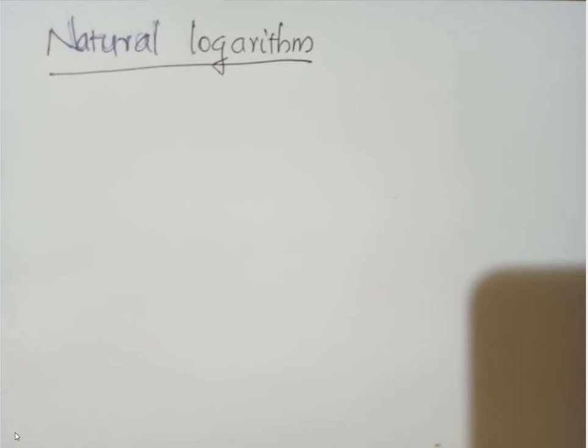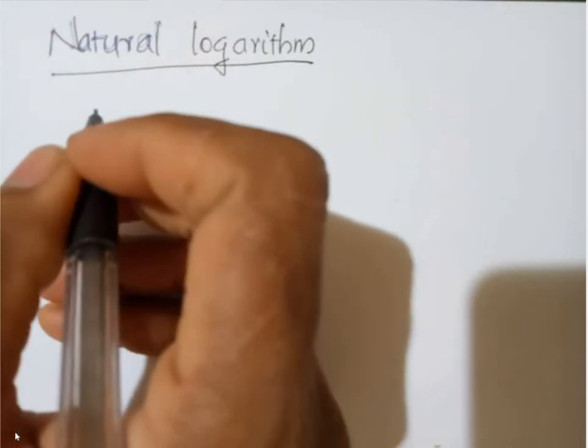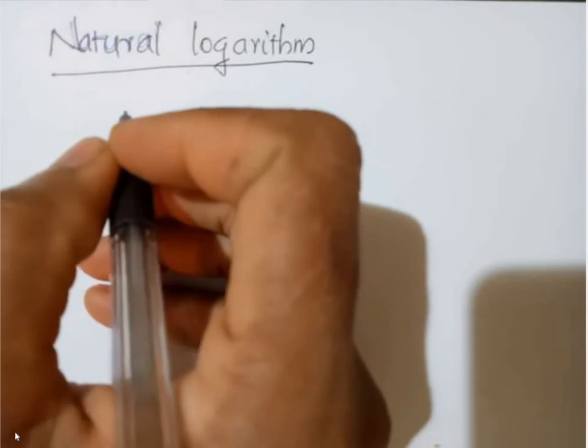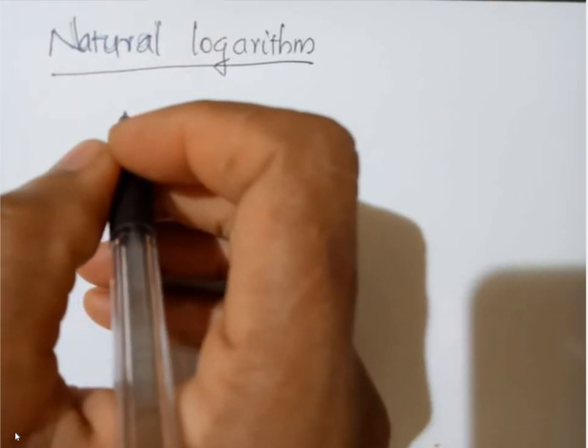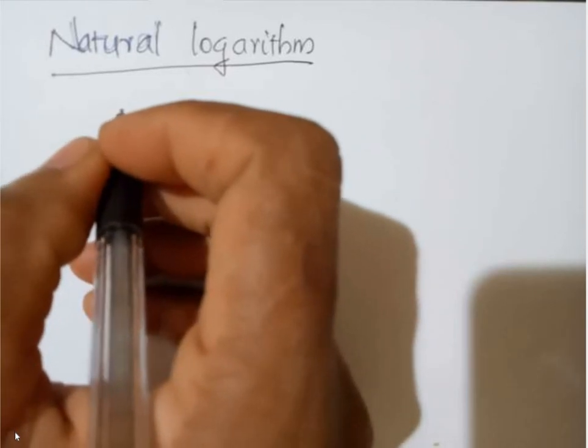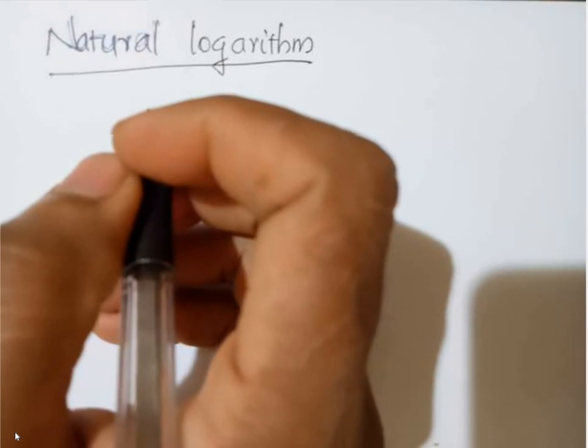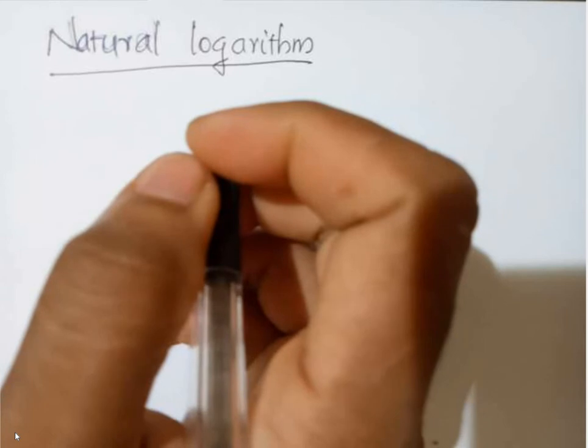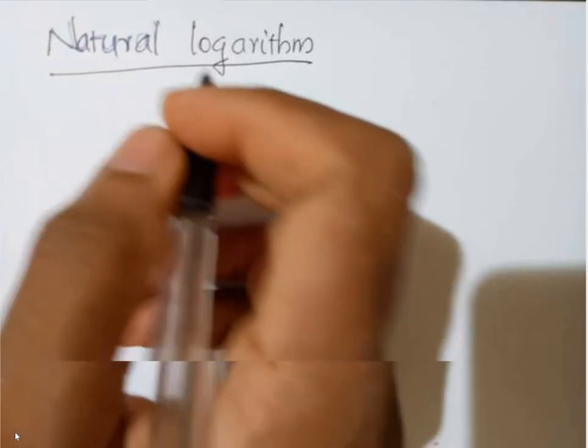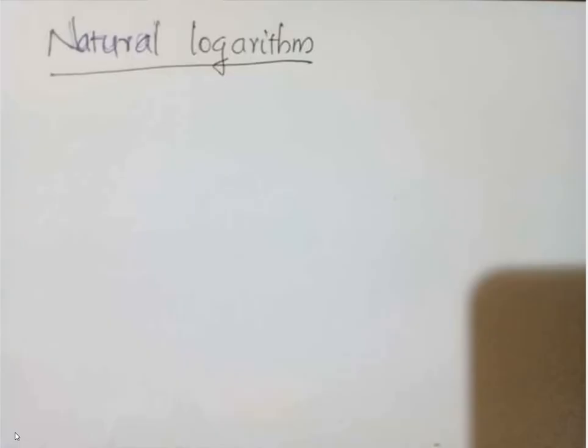Hi, good morning everyone. Today we are going to study the remaining portion of the natural logarithm. Yesterday you have studied something about natural logarithm's definition, derivative, and I have already given an assignment to draw the graph of a natural logarithm using the graphing vectors. I think you have already got it.